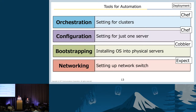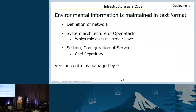If you want to use Chef as an orchestration tool, you need to use it with Cousin, because orchestration scripts often break clusters. So you need to divide the Chef script into a configuration part and an orchestration part. All scripts and configurations are written in text format — for example, a definition file of network settings, a system architecture of OpenStack, and Chef cookbook repository. So we can control the version of the whole OpenStack structure under Git.